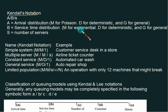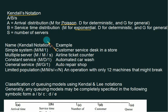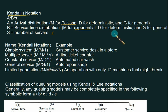The arrival distribution uses letter M for Poisson, D for deterministic, and G for general distribution. For service time distribution, letter M is used for exponential. So remember: M for Poisson as well as for exponential, D for deterministic, and G for general. S is the number of servers. M/M/1 stands for Poisson arrival, exponential service, and one server — example is a customer service desk in a store. M/M/S with multiple servers is an example of an airline ticket counter. Another model is M/D/1 — constant or deterministic service with one server — example is an automated car wash, where the service center has a specific limited space.